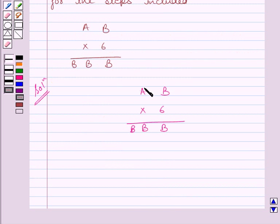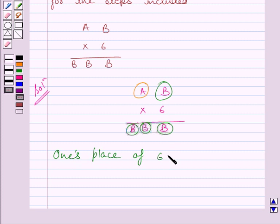Now we need to find value of two letters, A and B. Now clearly you can see, units place of 6 multiplied by B is B itself. So you can write, ones place of 6 multiplied by B is B.